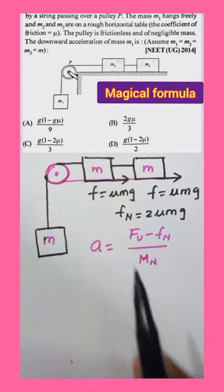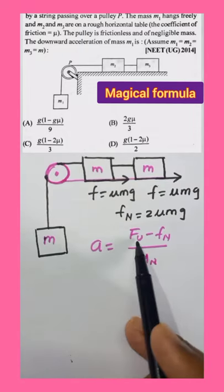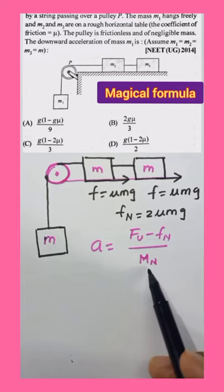So this is a magical formula to solve this problem in a single step. Acceleration is equal to unbalanced force minus net friction force by net mass.